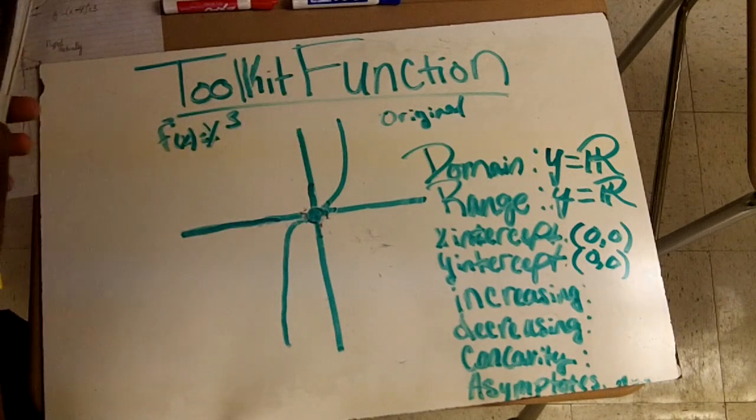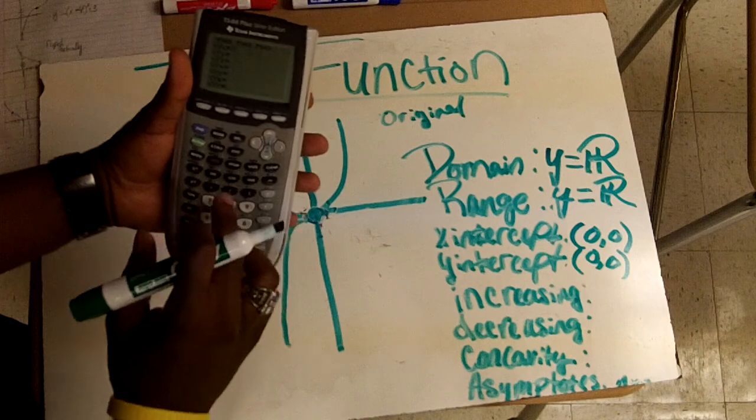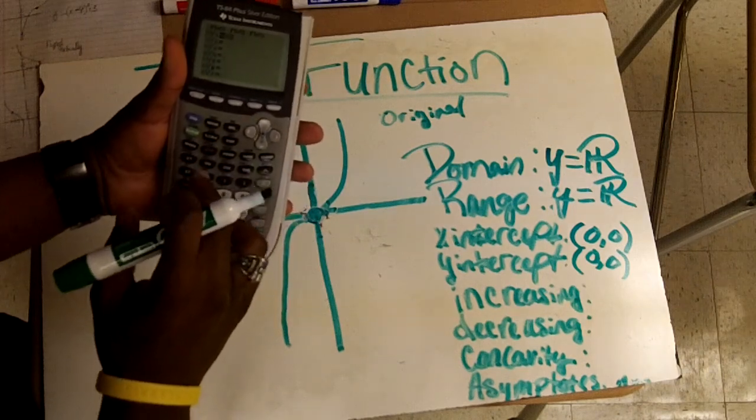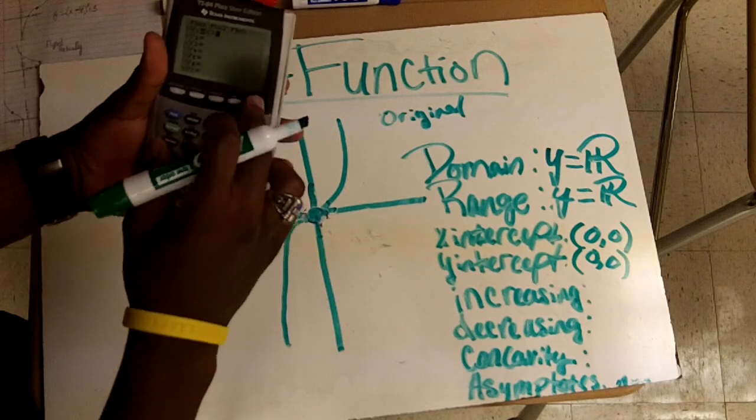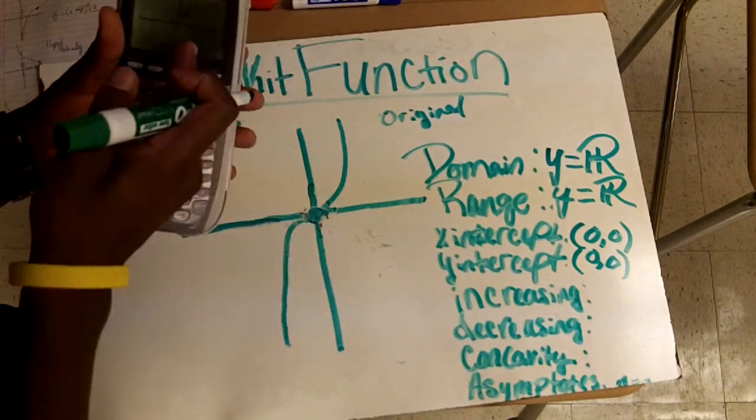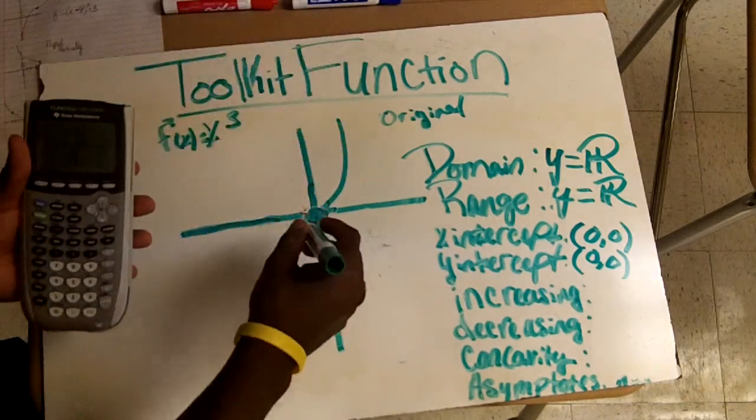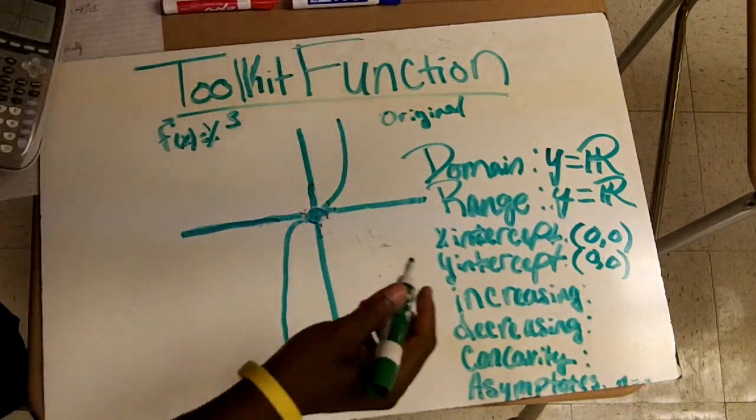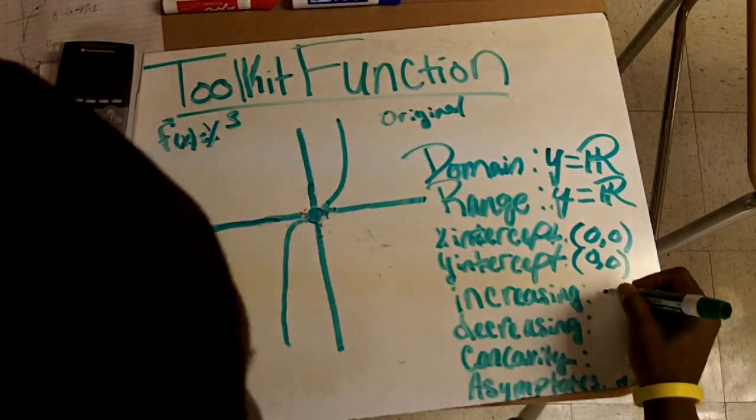Now if you're having trouble trying to determine if this is increasing or decreasing, you type it into your calculator. Just type in x cubed, hit graph, and as you can see from your graph it goes up, so this would be always increasing.